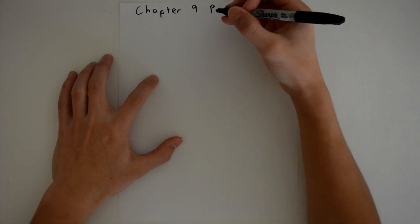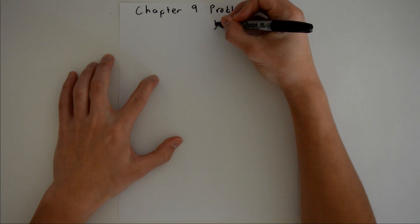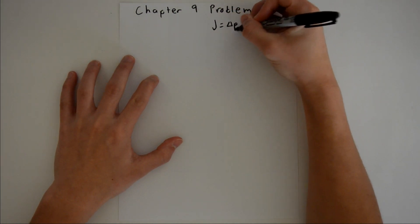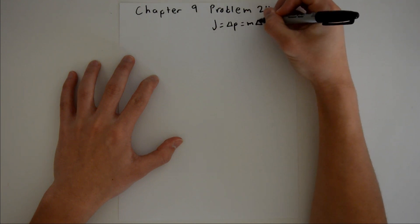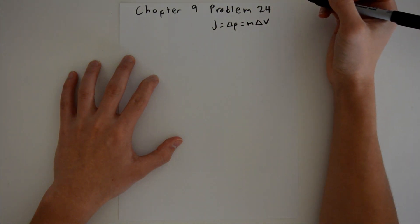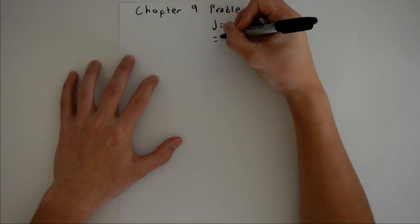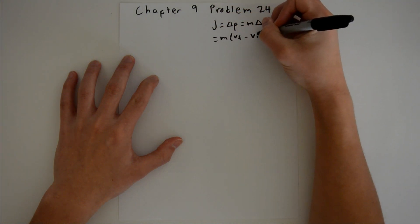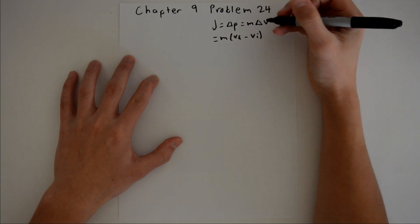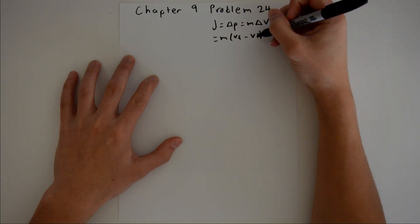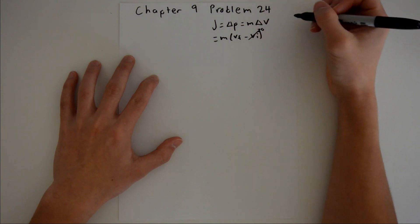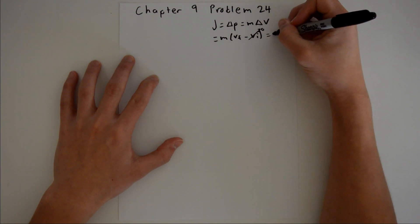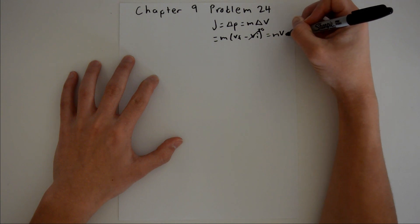So we know that impulse, denoted by J, is equal to the change in momentum, which is equal to the mass times the change in velocity. We can expand that to say mass times velocity final minus velocity initial. Since the person is starting standing up with no downward velocity, or their initial velocity is zero, this is just going to be equal to mass times the final velocity.